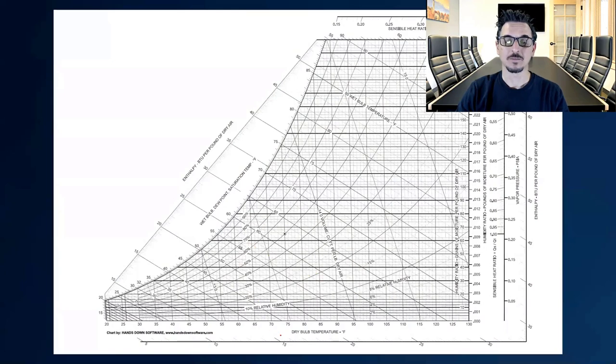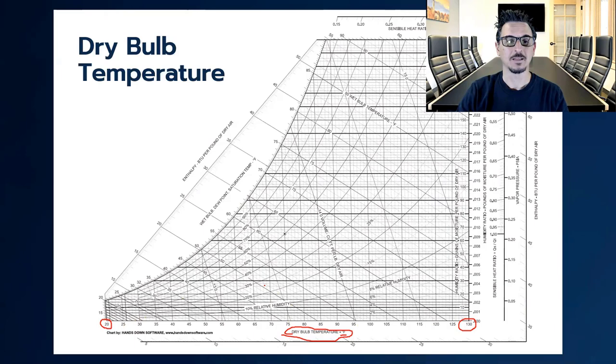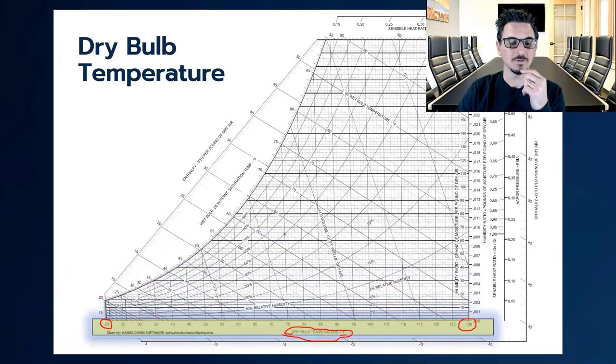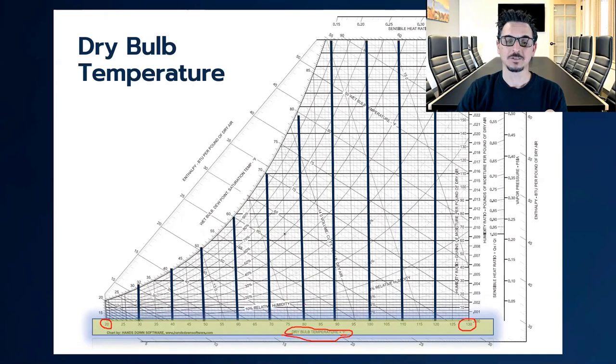If we look at the psychometric chart, the dry bulb temperature is on the bottom here. In this particular case 10 degrees Fahrenheit. It goes from 20 degrees up to 130 degrees as we move from left to right. If we go ahead and highlight this you can see the numbers here.